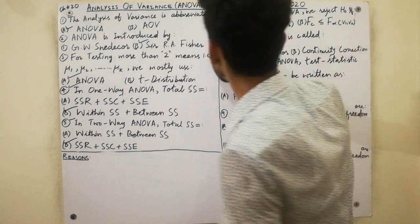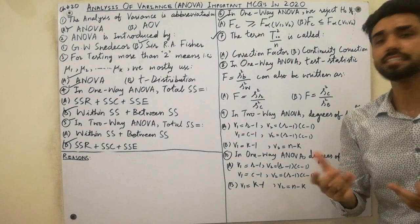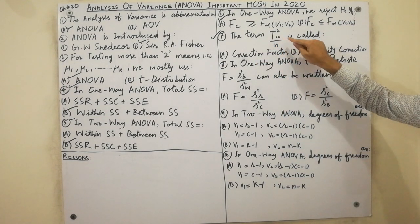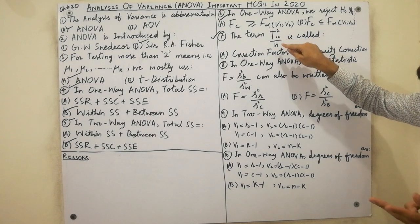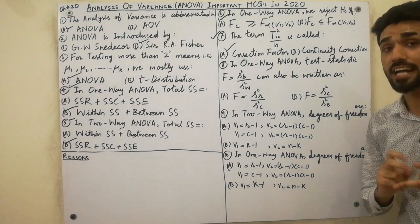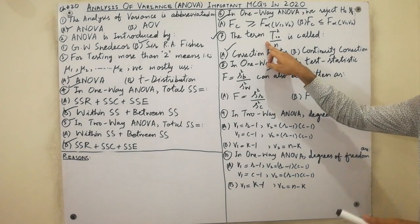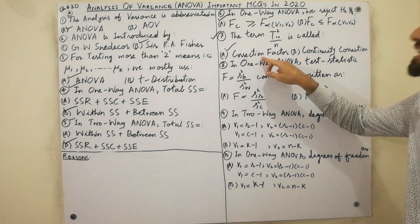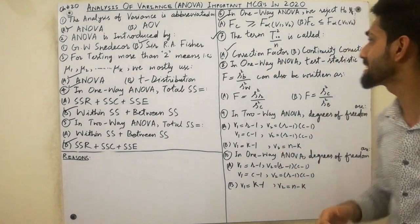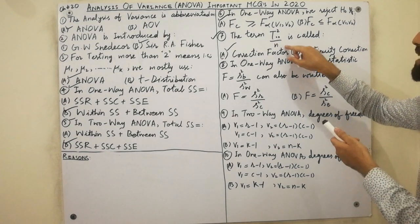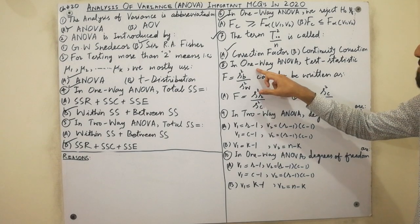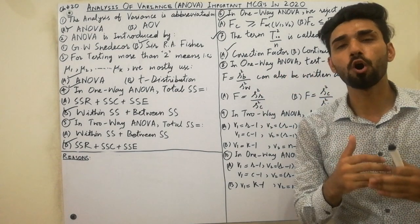The seventh MCQ: the term T².. (T-square double dot) divided by n is called the Correction Factor. Must remember that key point: the term T-square double dot over n is always called the Correction Factor.